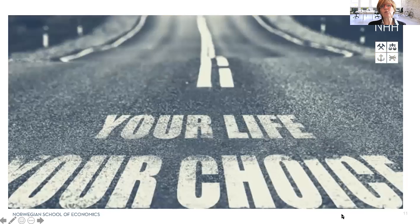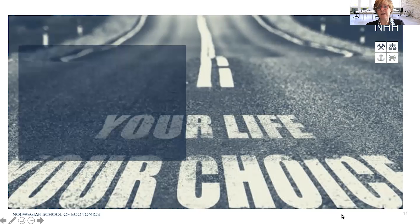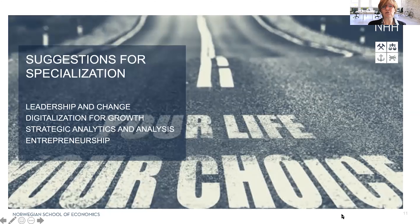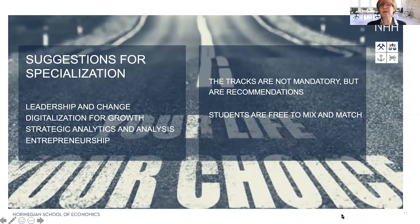We also recommend that you take some specialisation, and we have developed four tracks in the profile. These tracks are: leadership and change; digitalisation for growth; strategic analysis and analytics; and entrepreneurship. You can pick and choose — these are recommendations if you really want to specialise into one of these fields, but you are free to mix and match between them. For us, it's important to have some areas of specialisation where we can pool our resources. As students, you have an opportunity to follow one track or another, but it's really up to you.